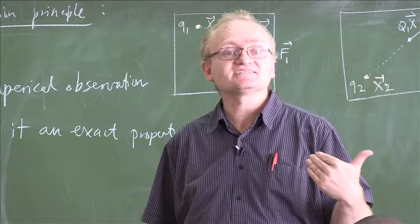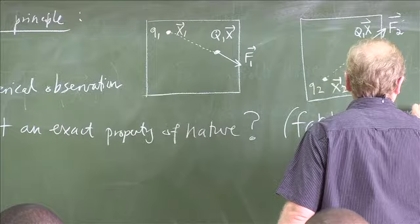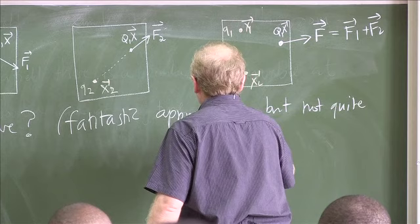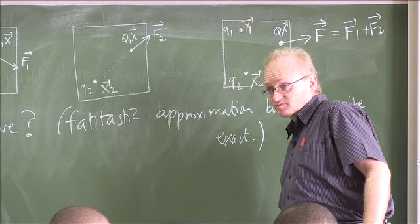For us, we're going to assume it's exact. And that will give us the correct classical theory of electromagnetism. So we'll say, this is a fantastic approximation, but not quite exact. It really is an excellent approximation, but not quite exact. For us, we will assume it's exact. So that's the first thing that we're going to assume, the superposition principle.